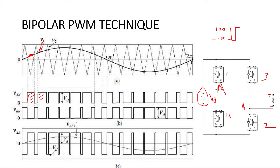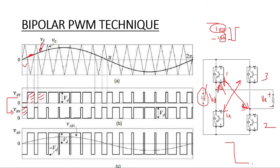Similarly in the other case, if reference is lesser than carrier, we generate one pulse which is the inverted waveform of the above pulses. This inverted pulse is fed to switches 3 and 4. When 3 and 4 operate, the negative point will be connected across the positive half and the positive point across the negative. So we will get the voltage across the resistor as minus VD — which is what I told earlier: plus 100 and minus 100, appearing as VD and minus VD.